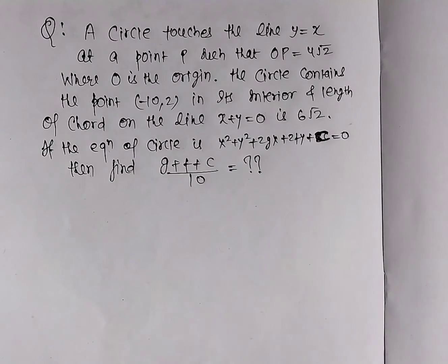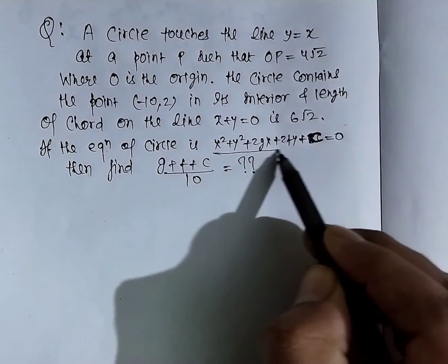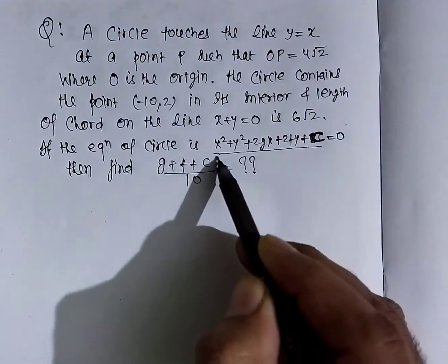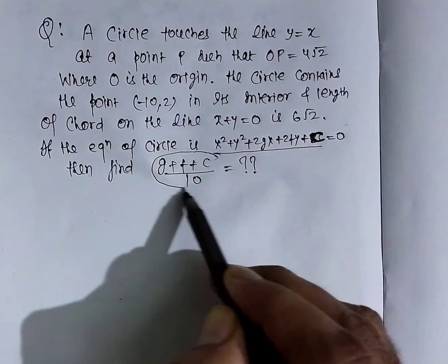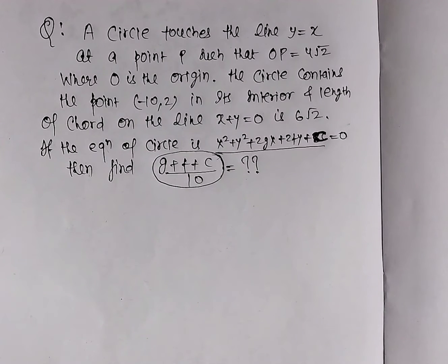After finding the circle and comparing with the standard form, we get the values of g, f, and c. We have to find the value of (g + f + c) / 10.